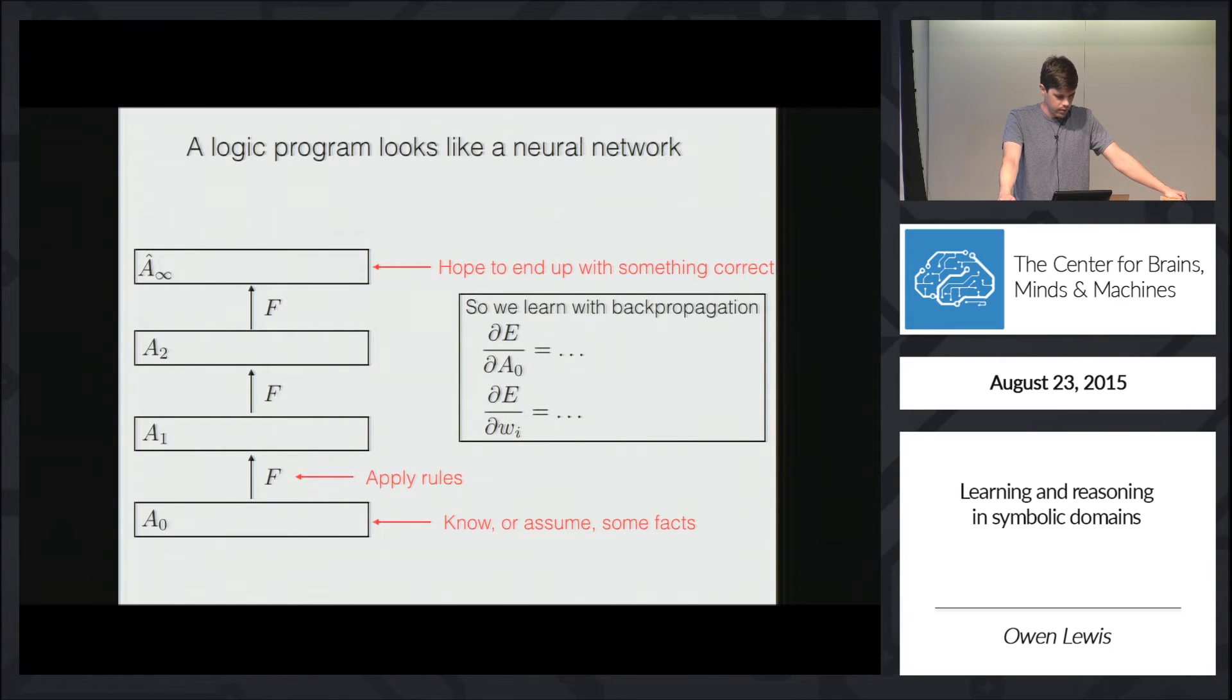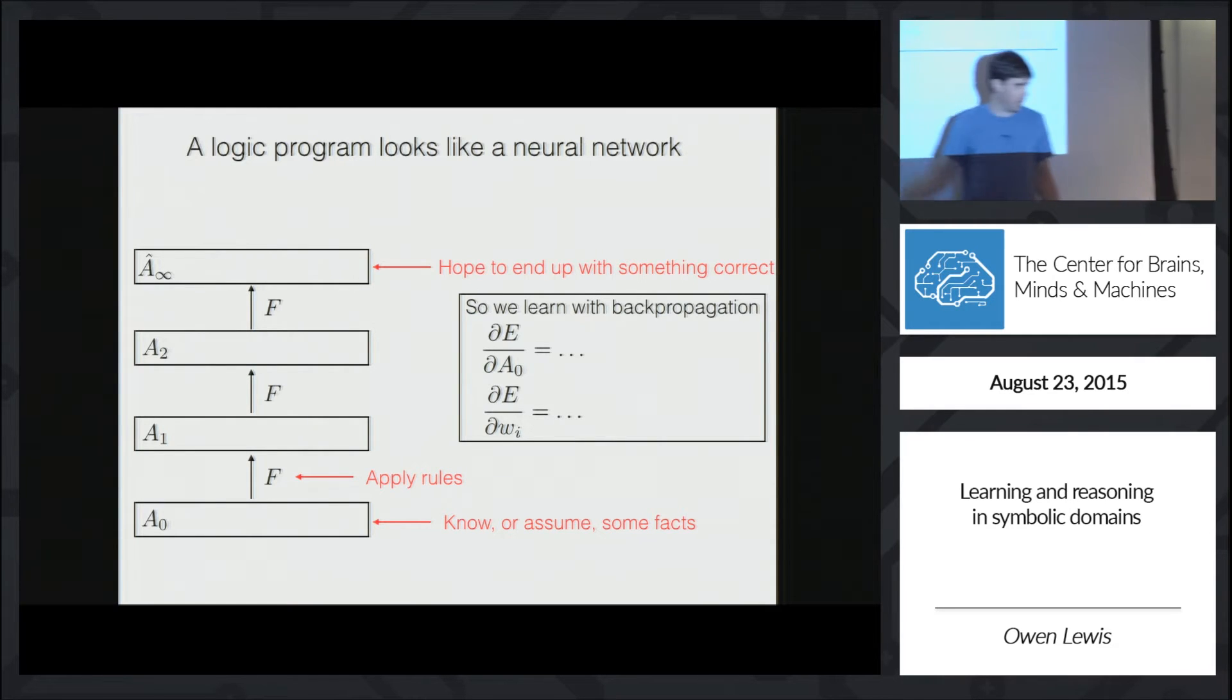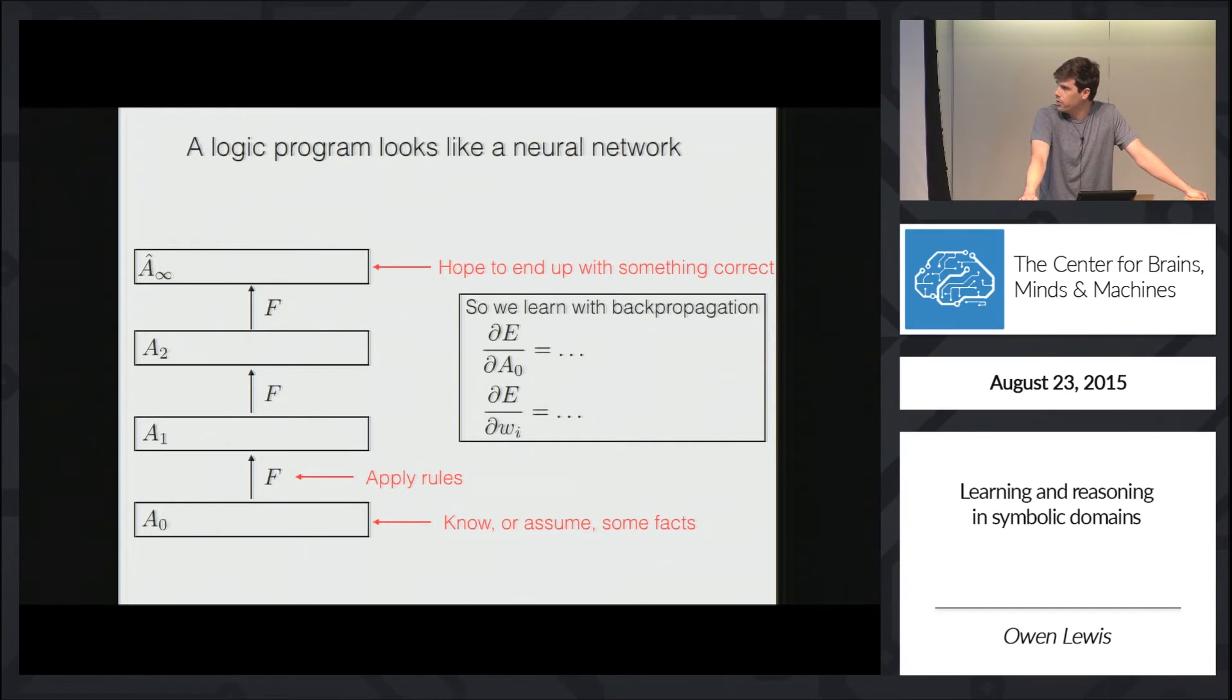So the first observation here is that applying a logic program to some data actually kind of looks like the sort of thing you encounter in neural networks. You start off here knowing some stuff or assuming some stuff, you apply some rules, you know more things, and you keep going, hopefully coming up with something useful at the end. So if we choose the right framing of our primitives, we can use standard techniques for learning this model, in particular backpropagation or backpropagation through time.